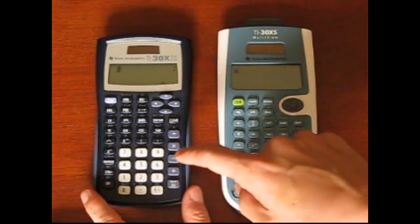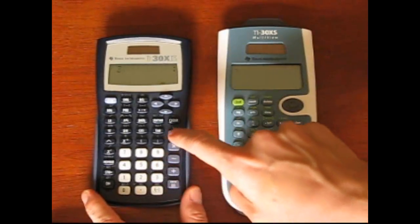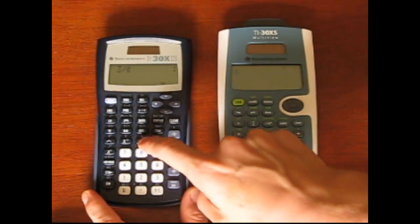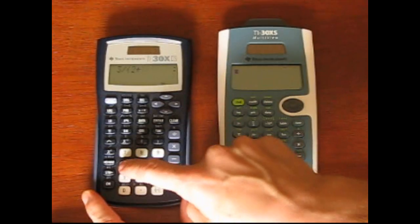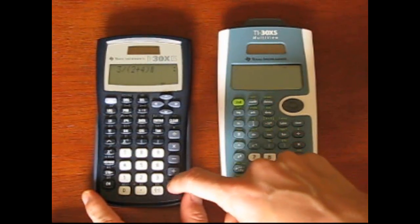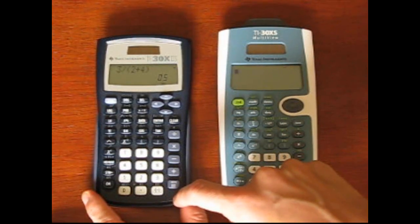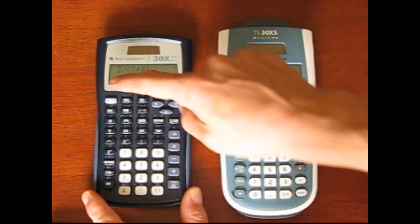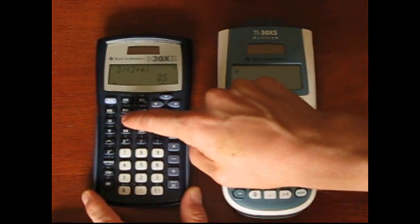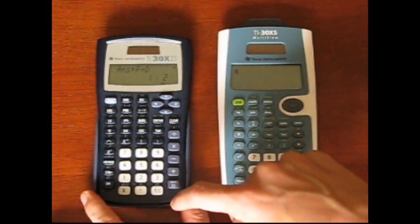Generally speaking, it's easier and more intuitive to enter calculations on the Multiview. Now, take a look at entering the equation 3 over the quantity 2 plus 4. On the X2S, you need parentheses, the divide symbol, and then the convert to fraction feature.